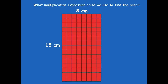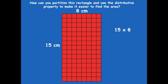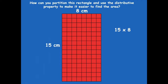What multiplication expression could we use to find the area? It would be 15 times 8, because you're multiplying those side lengths. How can you partition this rectangle and use the distributive property to make it easier? Just like in the last example where we had a shaded and unshaded part, partitioning means drawing a line to break it into two parts. Multiplying by 15 is a big number, so I would break that up. Think about what would help — I'm going to draw my line straight across.